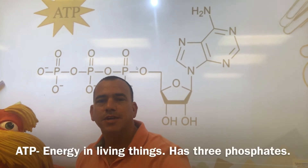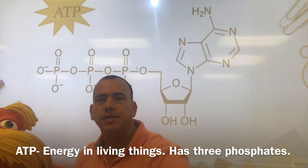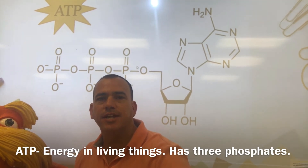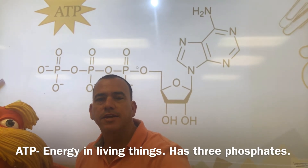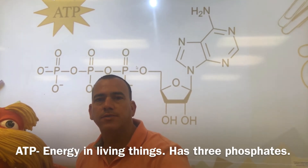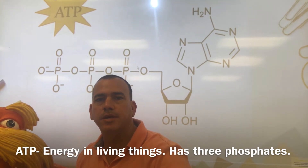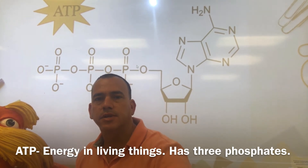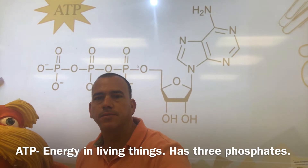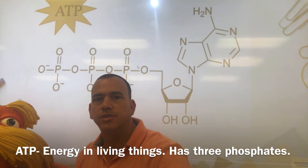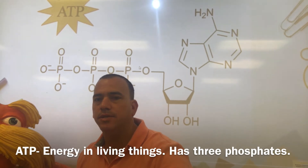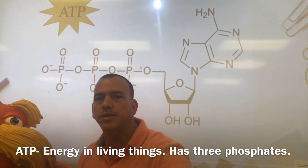The first word is ATP, which stands for adenosine triphosphate. It's the energy molecule in living things. It has three phosphates. When ATP gives up one of its phosphates, it becomes ADP. The difference: ATP has energy with three phosphates, ADP has no energy with only two phosphates. You need three phosphates for the energy.